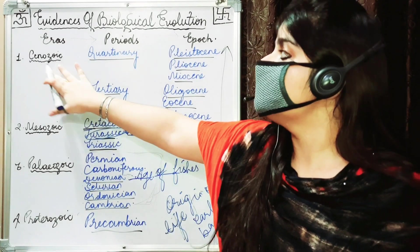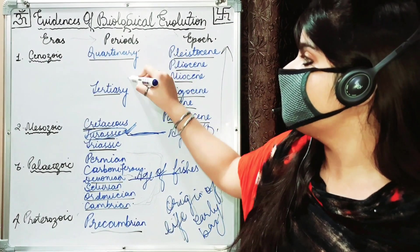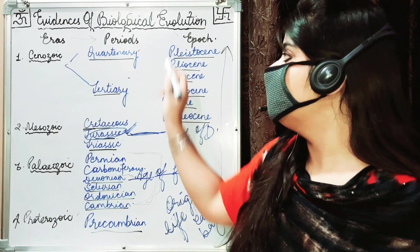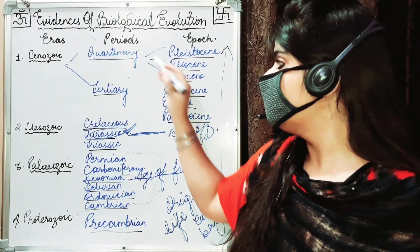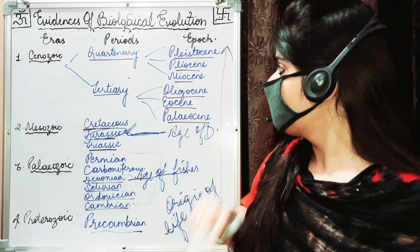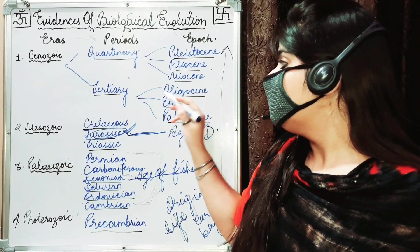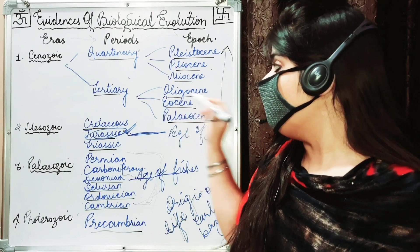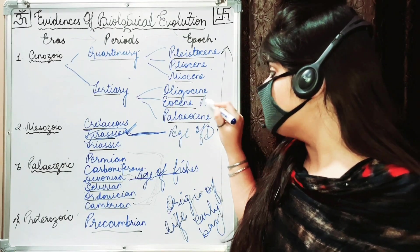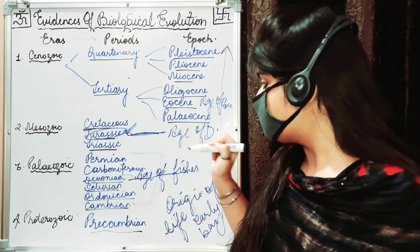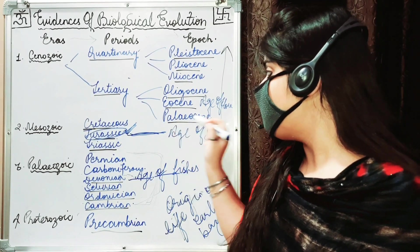Then Cenozoic is divided into two periods: Quaternary and Tertiary. These two periods are further divided into three epochs each. Quaternary has Pliocene, Pleocene, and Miocene. Then Tertiary is divided into Oligocene, Eocene which is the age of horses, and Paleocene.